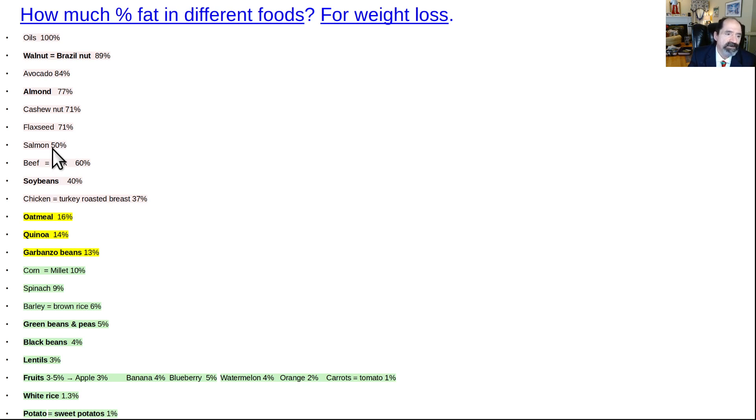Salmon, terrible food, 50% fat. Beef and pork, about 60% fat. It depends. You can make the beef and pork a little more lean. Same thing with chicken. But in general, it's in that ballpark. 50% or more fat.